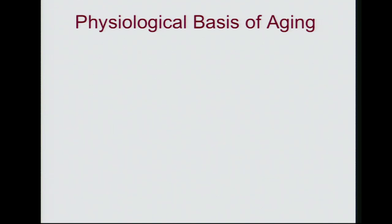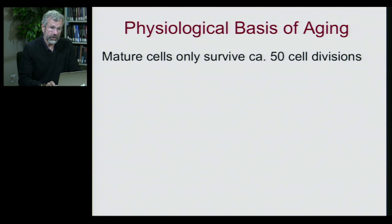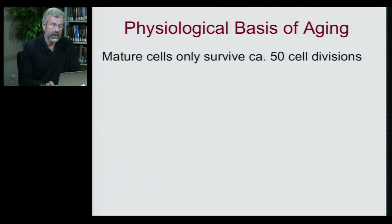First, let's look at the way the machinery of our body wears out - the physiological basis of aging. Human cells can be cultured in isolation in a beaker or a dish, and the cells will divide perfectly normally for a while. But after about 50 cell divisions, they stop. There's a limit on cell life.